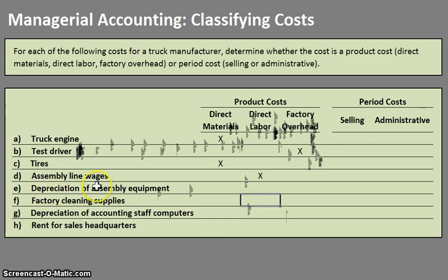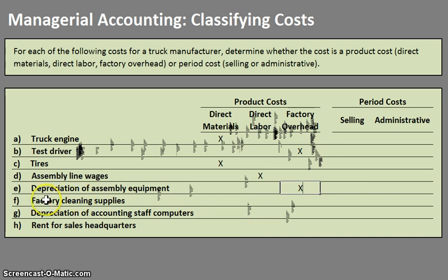The depreciation of the assembly equipment — this is assembly, so it's in the factory and is a product cost. Ask yourself: is it a direct material? No. Is it direct labor? No. Depreciation for product costs is factory overhead. Factory cleaning supplies work the same way — it's definitely related to the factory, so it's a product cost, but it's not a direct material and not direct labor, so it is also factory overhead.